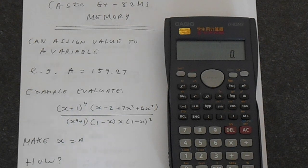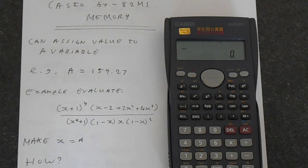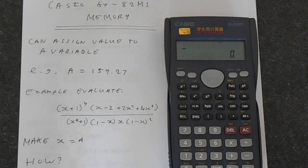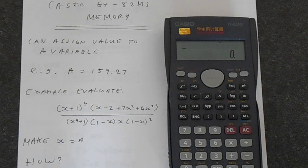In this video, I'm going to show you how to work the memory functions on your Casio FX82MS calculator. The most useful function you've got on this calculator is the ability to assign a value to a variable. This may seem trivial, but it is actually very useful.